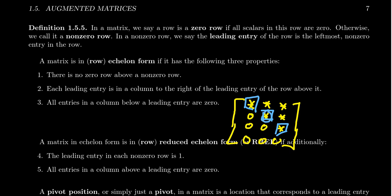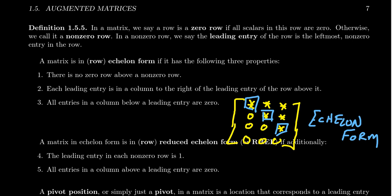Notice the leading entries make a downward staircase — if you take a leading entry, it's to the right of the entries above it. Everything below a leading entry is zero. This would be an example of an echelon matrix. The word 'echelon' derives from a French word which translates as staircase or ladder. A matrix is in echelon form if we're building this ladder of zeros, climbing down the matrix along the leading entries. These leading entries are also sometimes called pivots or pivot positions — that terminology makes more sense when we introduce the elimination algorithm in section 1.6.